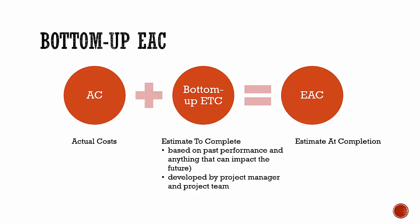Forecasting the EAC involves making projections of conditions and events in the project's future based on current performance information and other knowledge available at the time of the forecast. The work performance information covers the project's past performance and any information that could impact the project in the future. EACs are typically based on the actual costs incurred for the work completed plus an Estimate to Complete of the remaining work.